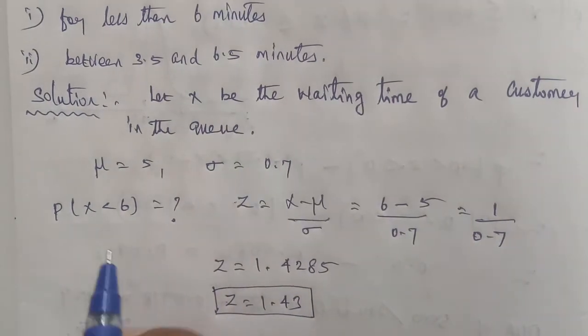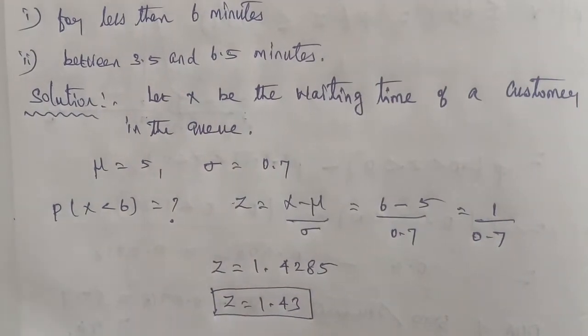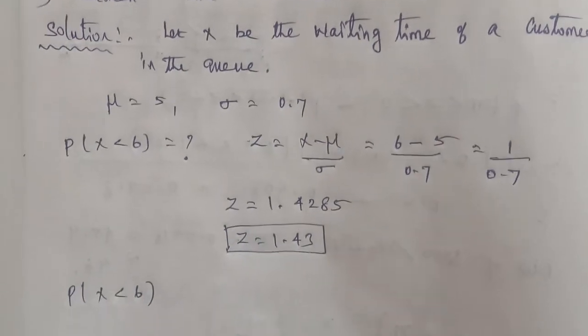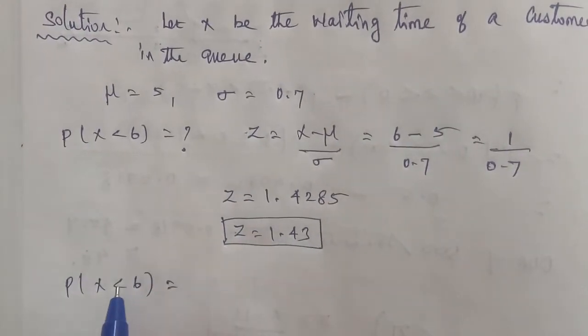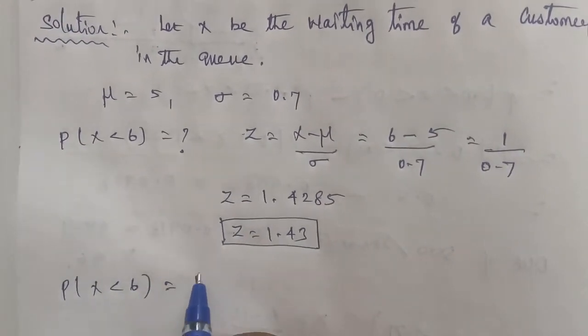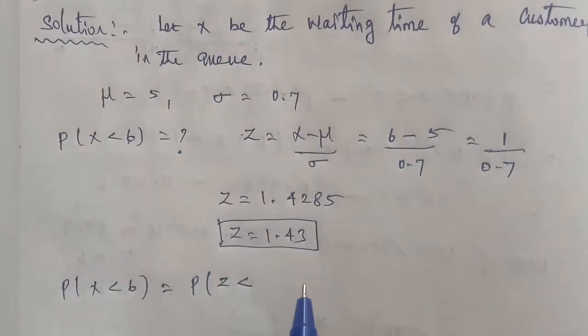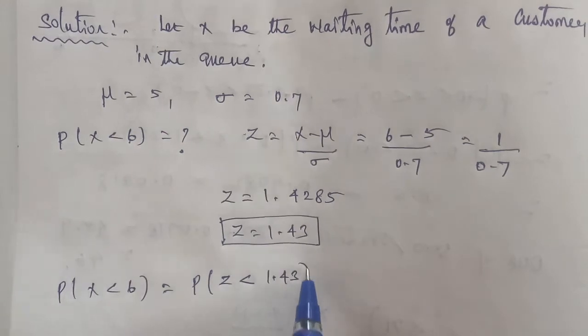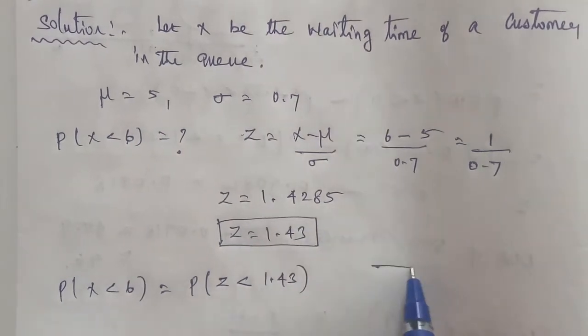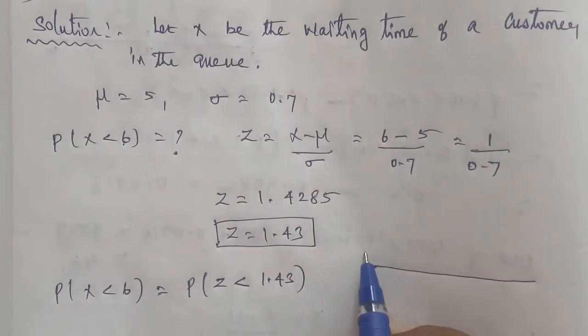For submission one, the answer is P(X < 6) equals P(Z < 1.43) in normal distribution. The normal distribution graph is a bell-shaped curve.